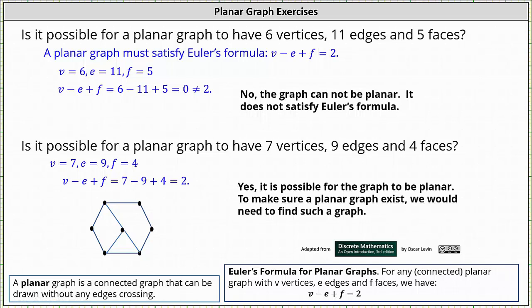Notice how there are seven vertices. Let's count the edges. We have one, two, three, four, five, six, seven, eight, nine edges.